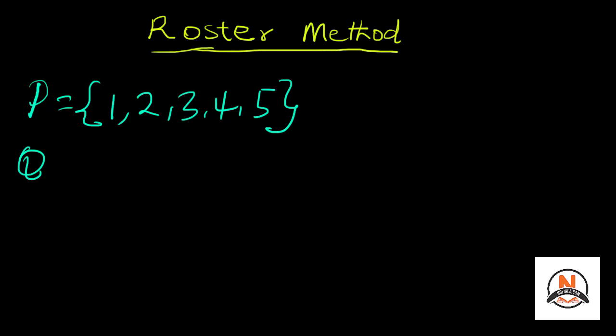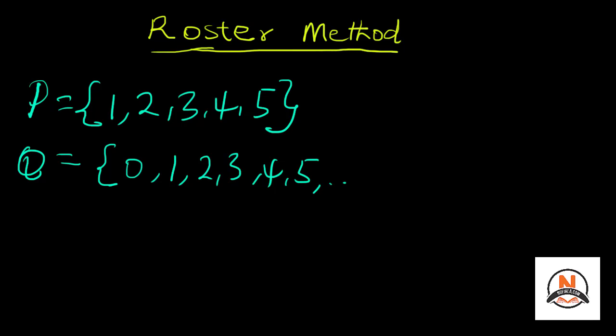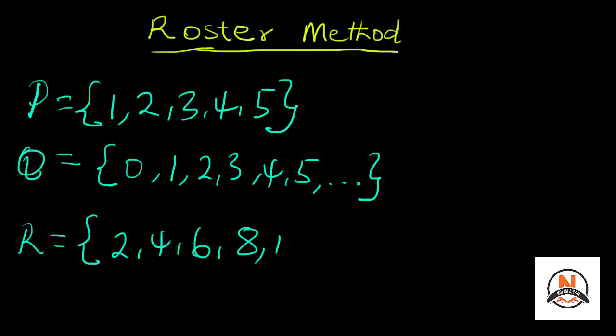Let's take set Q as all whole numbers. We start from 0, 1, 2, 3, 4, 5, and since we can't list all whole numbers, we put three dots called ellipses to show we keep counting on and on. Now set R is a set of even numbers less than 12, so that gives us 2, 4, 6, 8, and 10. We simply list the elements in the set — that is the roster method.